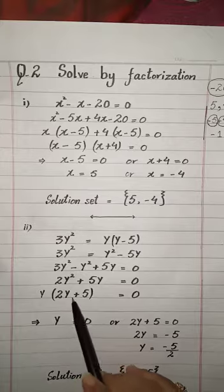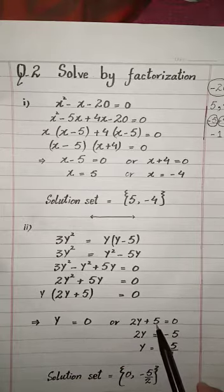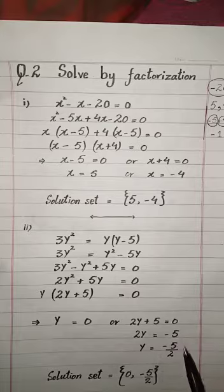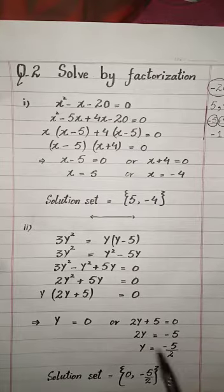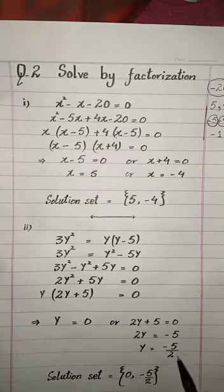Now put y = 0, and 2y + 5 = 0. From here, 5 is positive so on the other side it will be negative: 2y = -5. And 2 is multiplied, so on the other side it will be divided: y = -5/2. Solution set of the above equation is {0, -5/2}.